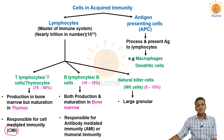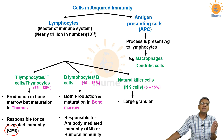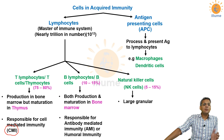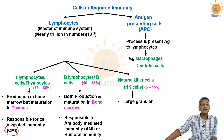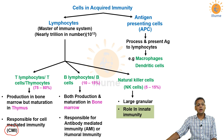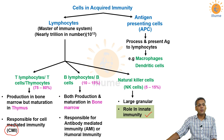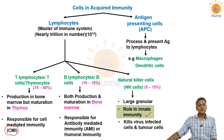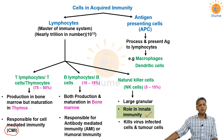Natural killer cells are large granular cells. B and T lymphocytes are agranular — there are no granules in T and B cells — but natural killer cells have granules in the cytoplasm. NK cells have a role in innate immunity, not acquired immunity. They kill virus-infected cells and tumor cells.